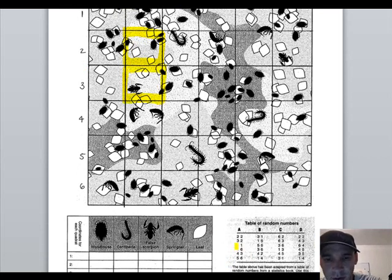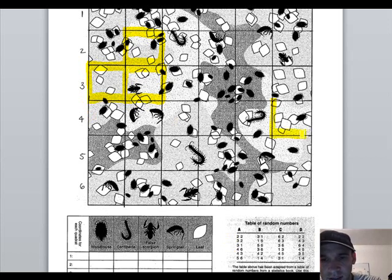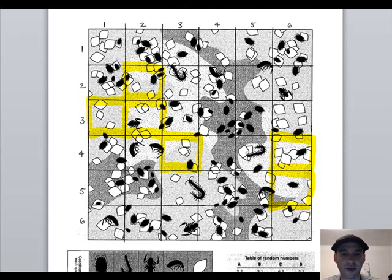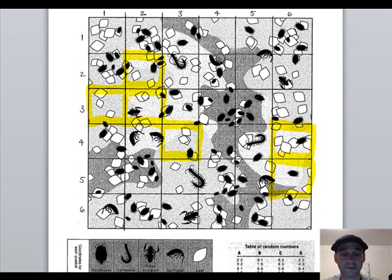Then I'd have row 3, column 1, that would be my third one. Then I'd have row 4, column 6. Then row 4, column 3, and then row 5, column 6. So I would be using those six quadrats as a representative sample of what I might be counting.